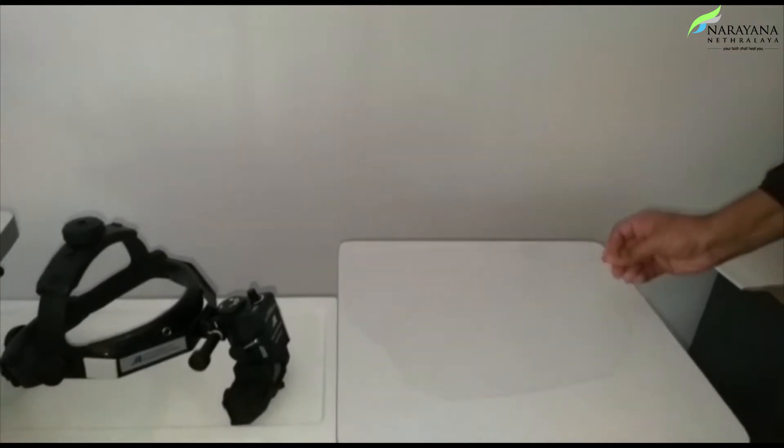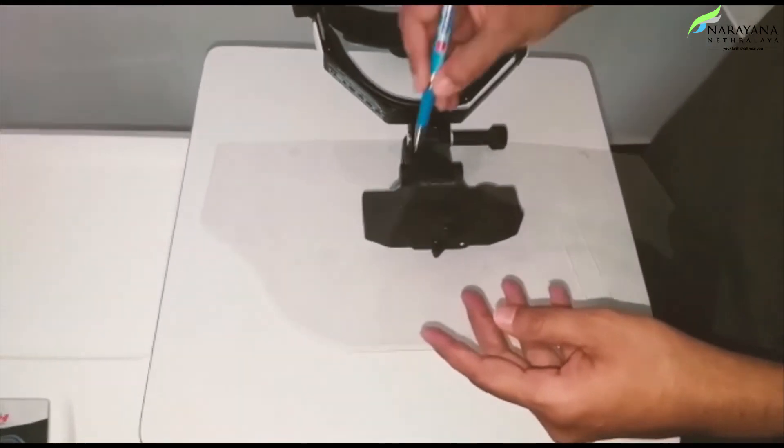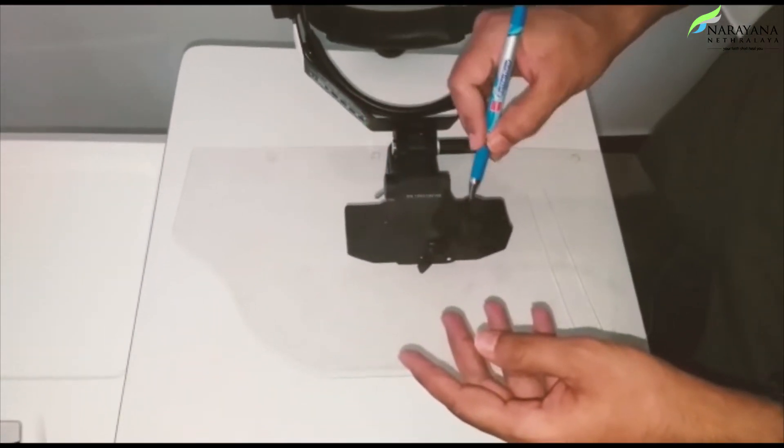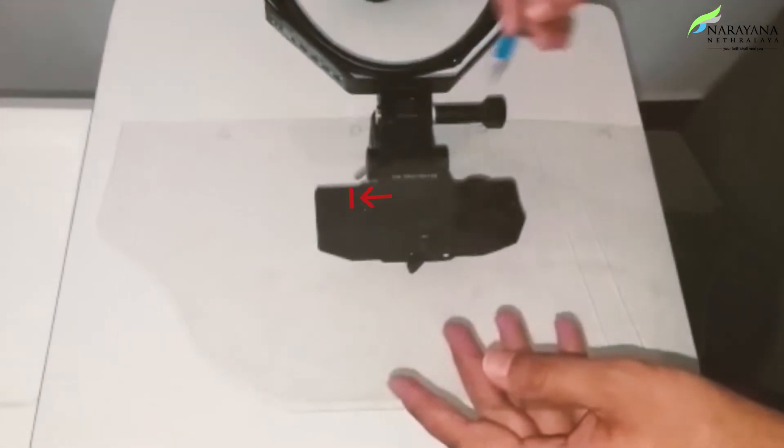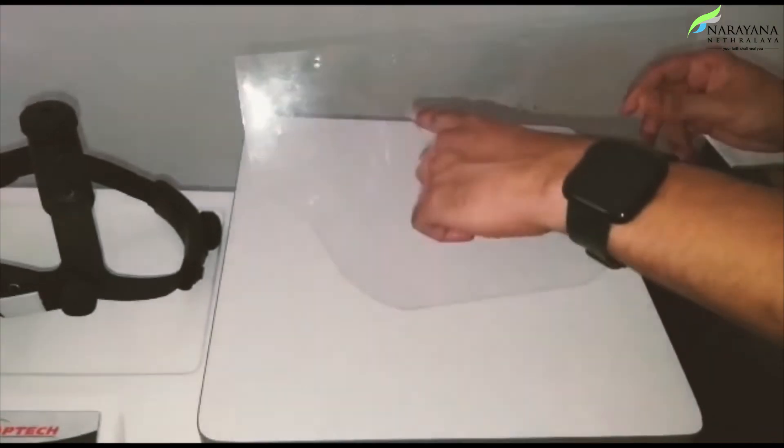Take a transparent OHP sheet, cut off the sharp edges, and place it over the eyepiece of the IDO to mark the height and width. The width can be made larger to allow for IPD changes. Cut out the marked portion.